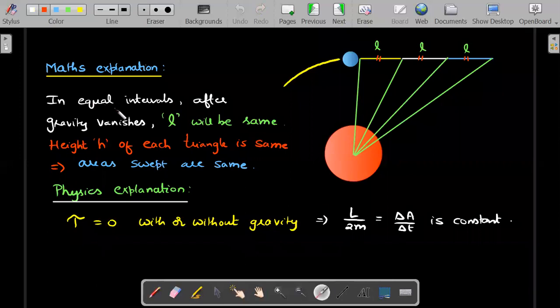So you should realize that in math's explanation, if gravity vanishes it goes in straight lines. I've marked into three different straight lines in equal intervals of time. The value of that L would be same. And if I draw triangles of the area swept, so this height of the triangles are same. The cap H of that each triangle is same. So half base into height of these triangles with the same basis would be same. So math explanation tells you that the areas would be same, which is what precisely Kepler's law talks about. In equal intervals of time it sweeps equal areas. What is the physics explanation for that? Whether the gravity is there or gravity is not there torque will be zero. Torque is zero means angular momentum is conserved or L divided by 2M which is the aerial velocity is conserved. That means the area swept for equal intervals of time would be equal.